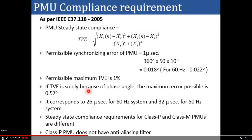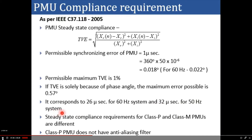If the total vector error is solely due to phase angle, the maximum error possible is 0.57 degrees. Translating into time, the maximum error is 26 microseconds for a 60 Hz system and 32 microseconds for a 50 Hz system.